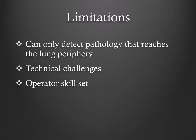As with all imaging modalities, lung ultrasound has its limitations. Firstly, ultrasound can only detect pathology that reaches the lung periphery, as normal lung will scatter sound waves before reaching deeper findings. Secondly, lung ultrasound can be technically challenging due to rib shadowing and patient variability in size and complexity of disease. Finally, this is an operator-dependent process. To be effective, you have to keep practicing — hence this podcast.